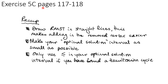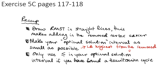You should now be able to do exercise 5C on pages 117 to 118. Quick recap: when you draw your residual minimum spanning tree, draw them as straight lines — this makes adding in the removed vertex easier. Make your optimal solution interval as small as possible, meaning make your lower bound as high as possible. Pick the highest lower bound from the removed vertices.